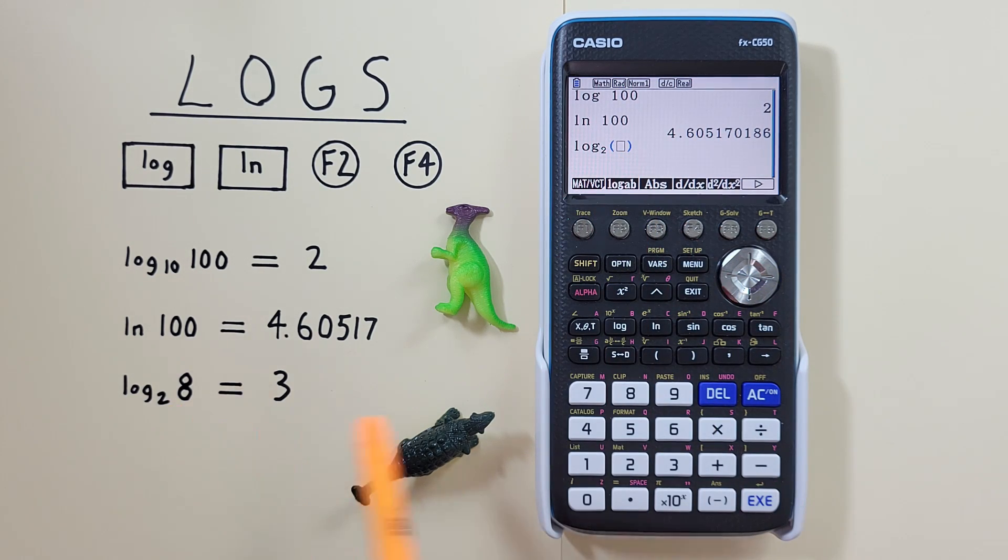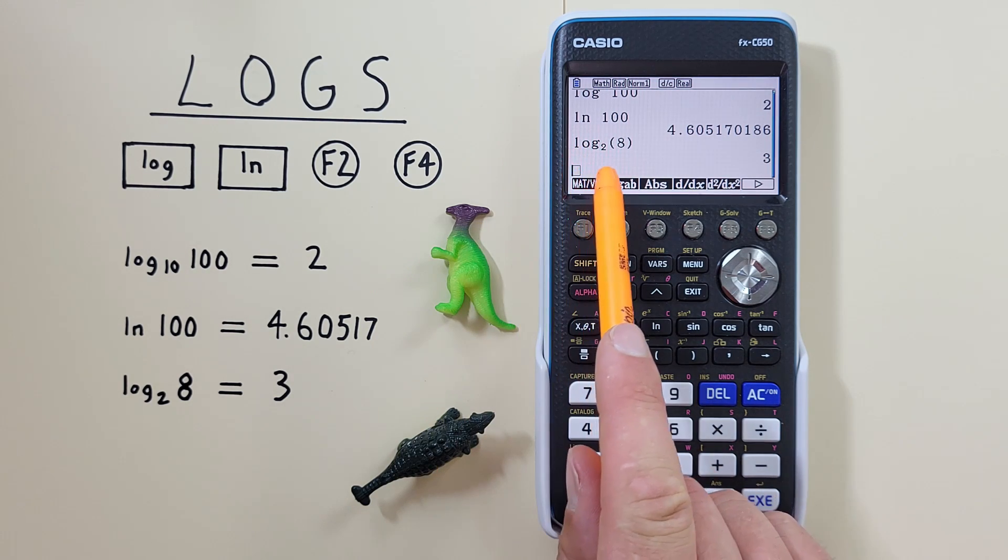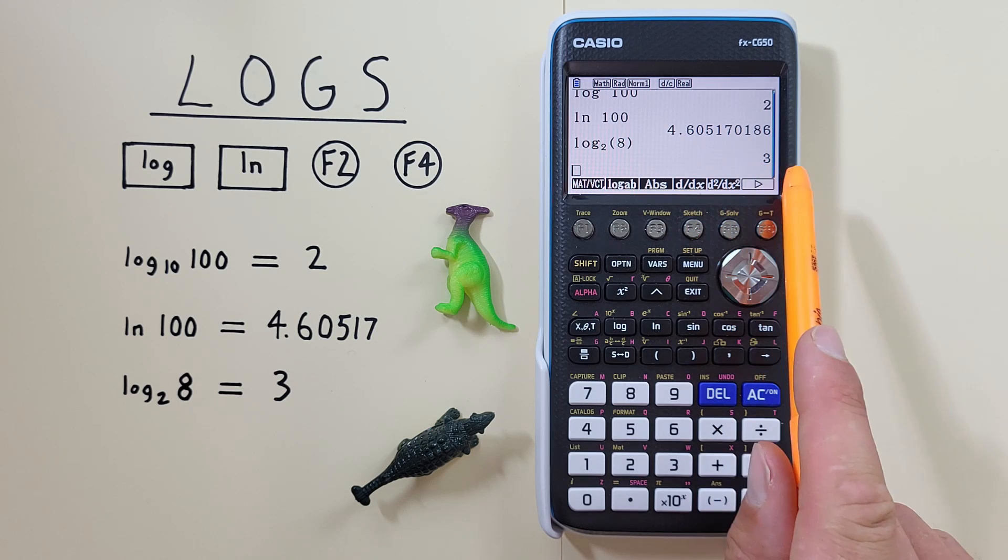And then we enter the 8 here and hit exe. And we see we get the result of log base 2 of 8 is equal to 3.